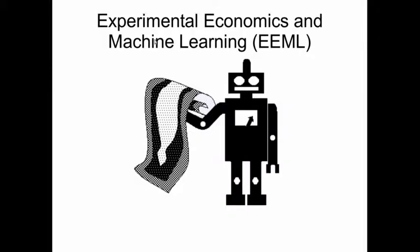Welcome to the short presentation of the Experimental Economics and Machine Learning initiative. Our goal is basically to introduce AI algorithms into the process of understanding individual human behavior. Therefore, we chose a carpet-selling robot as a symbol of our initiative.